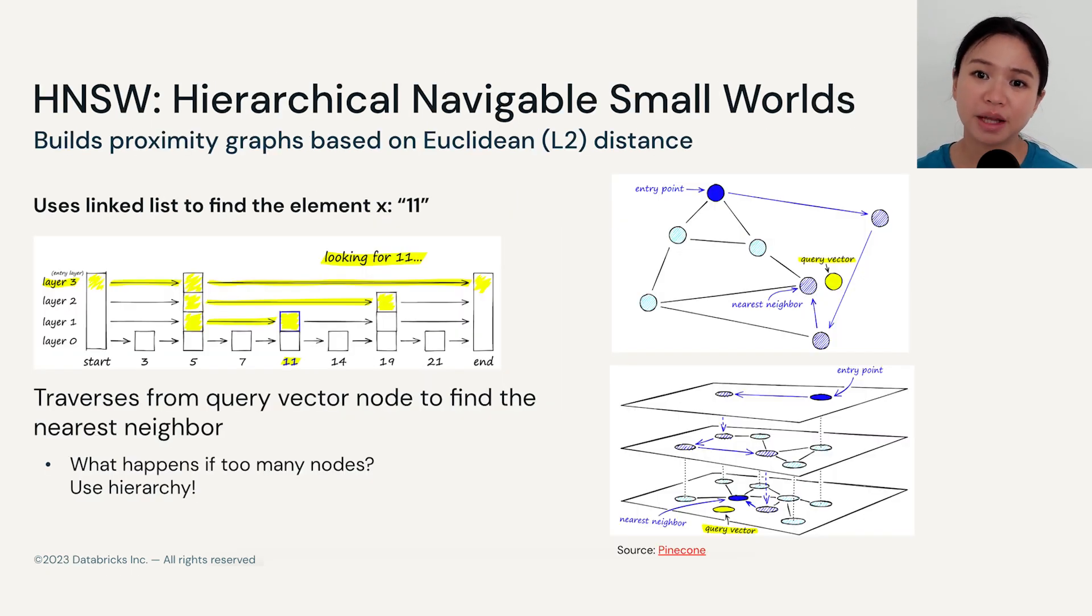The other common algorithm implemented is HNSW, which stands for Hierarchical Navigable Small Worlds. It also uses Euclidean distance as a metric, but instead of clustering, it's a proximity graph-based approach. There are a lot of nitty-gritty details, but we'll focus on the main structure components that make up HNSW.